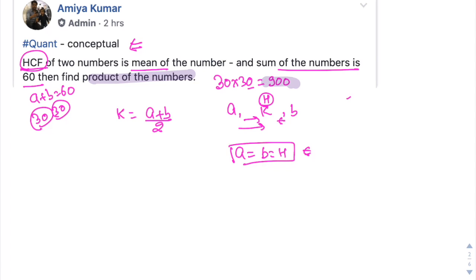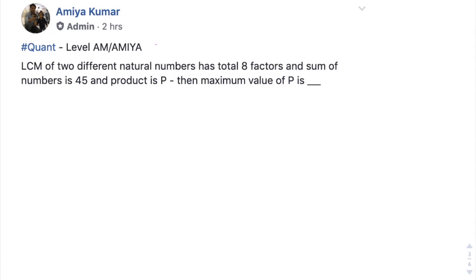Next question is quite easy. We have sum of numbers, that means a plus b is 45. I want the maximum value of the product. Maximum value of product is only possible when the data are equal, and we have natural numbers. So both data cannot be equal because sum is 45, so one data is 23 and the second data is 22.